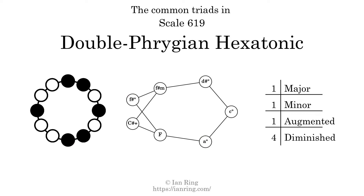Here is a Hamiltonian path of parsimonious voice leading that uses all the triads.